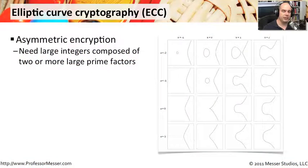An emerging technology in cryptography is something called elliptic curve cryptography, or ECC. ECC was created because of the constraints that we have associated with the calculations that we use in asymmetric encryption.